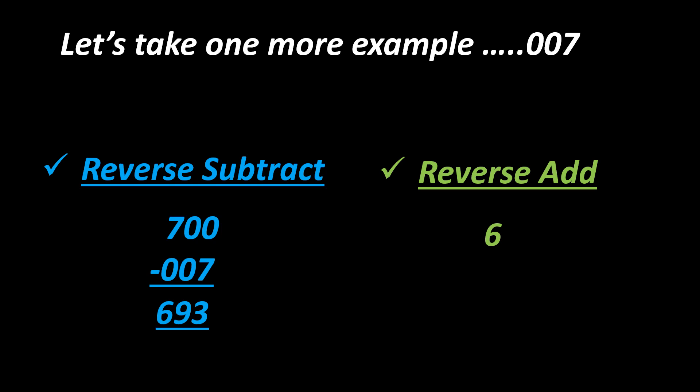Now reverse add: 693 plus 396, and you get your answer 1089.